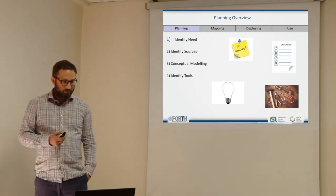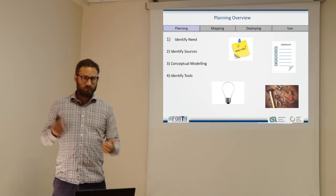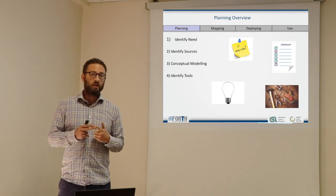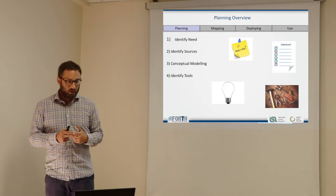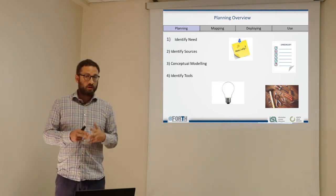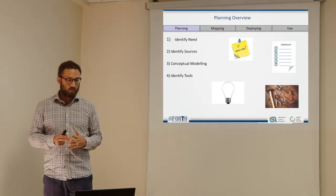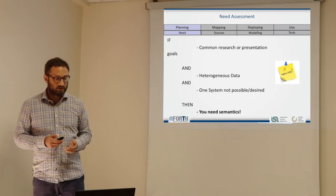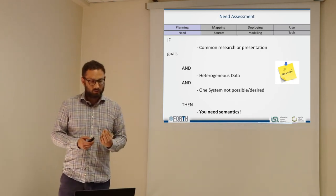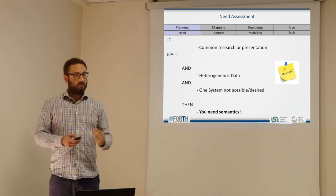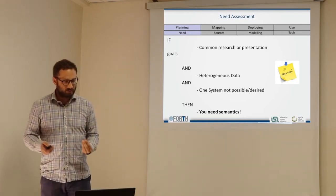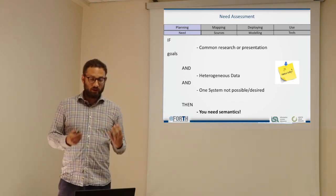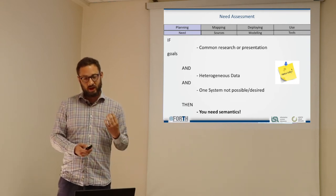For planning, you first want to identify the need for doing a semantic project, second identify the sources you want to bring into a semantic network, third start doing some conceptual modeling, and then identify the actual tools you want to use. It's not necessarily the case that you need to use a formal ontology or make semantic data. You should identify why you want to do a semantic project and if you really need to do it.